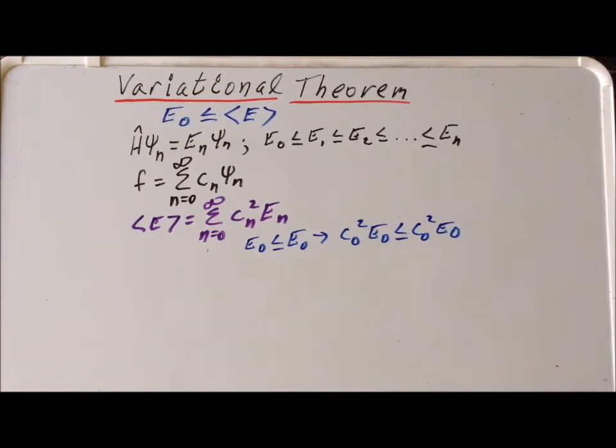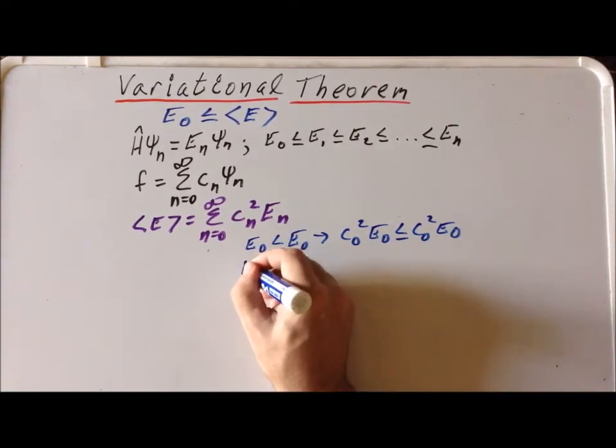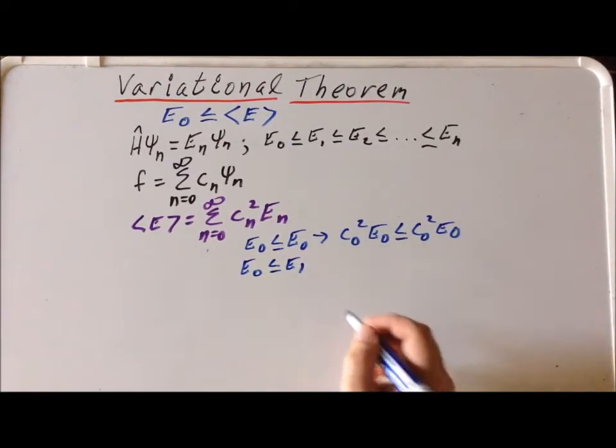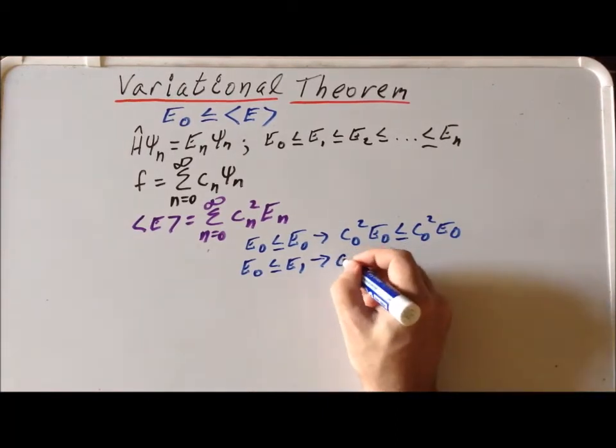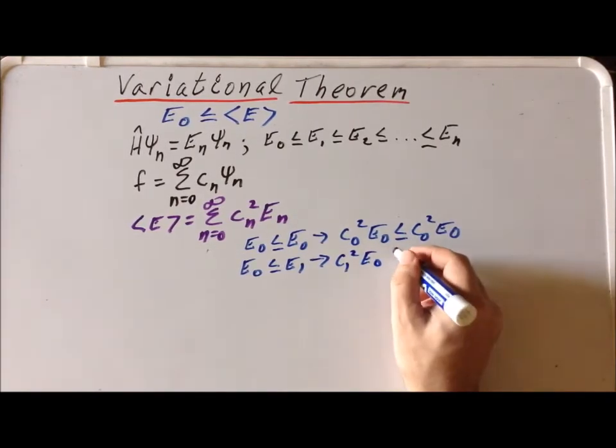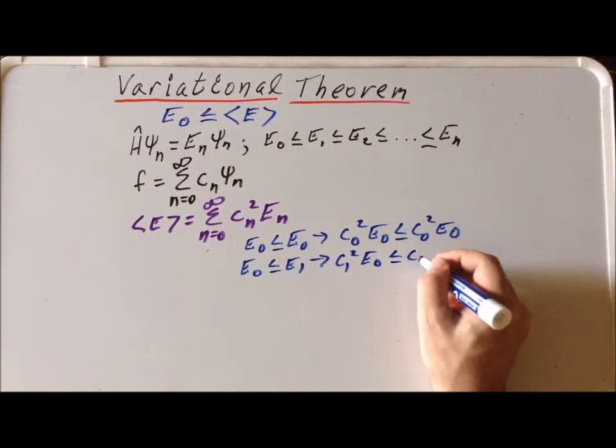Next, we have e sub 0 is less than or equal to e sub 1. We can multiply each side of this inequality by c sub 1 squared, so e sub 0 is less than or equal to c sub 1 squared e sub 1.